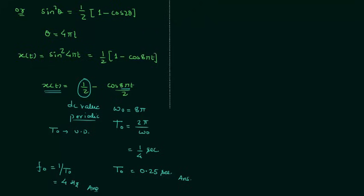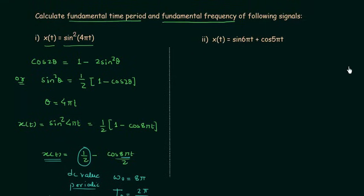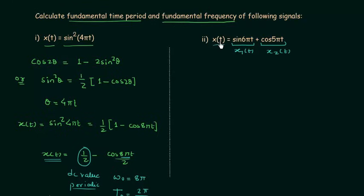Now we will move to the second problem. Here x(t) = sin(6πt) + cos(5πt). Let x₁(t) = sin(6πt) and x₂(t) = cos(5πt). Signal x(t) is a composite signal, and we have to follow 4 steps to find its period and frequency. Let's start with step 1.